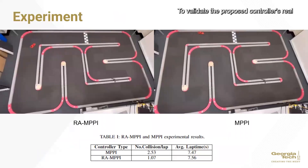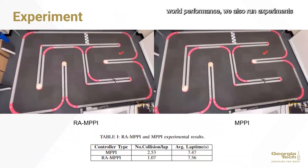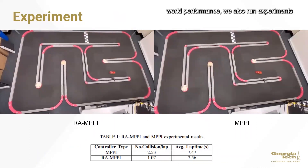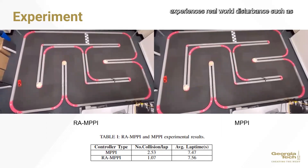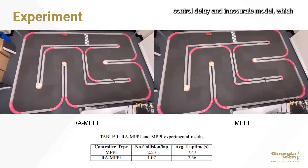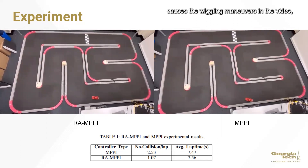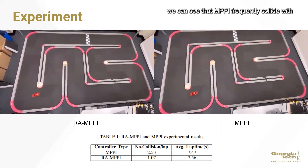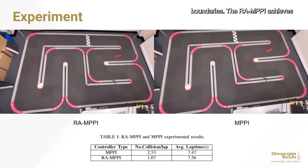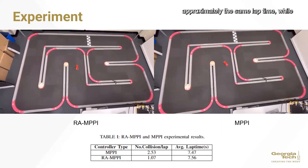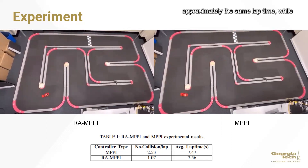To validate the proposed controller's real-world performance, we also run experiments on the real car. The autonomous vehicle experiences real-world disturbances such as control delay and inaccurate model, which causes the wiggling maneuvers in the video. We can see that MPPI frequently collides with boundaries, while the RNPPI achieves approximately the same lap time while significantly reducing the number of collisions.